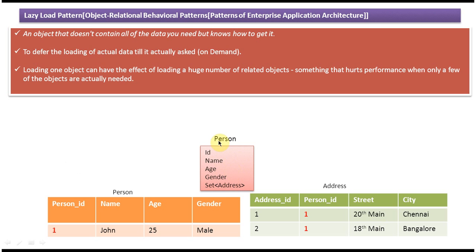If we define a class for the person table, it will have ID as long, name as string, age as integer or long, and gender as string. Since one person can have many addresses, the person class also has a set of addresses.